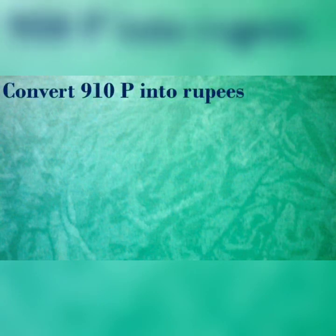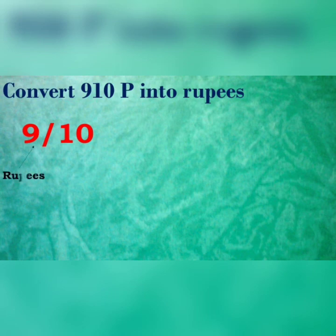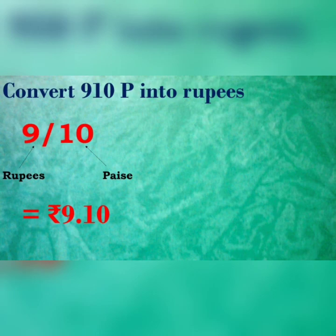Our next question is: Convert 910 Paise into Rupees. Again, write the symbol of Rupees and put a point after 2 digits from the right. Our answer is Rupees 9.10.